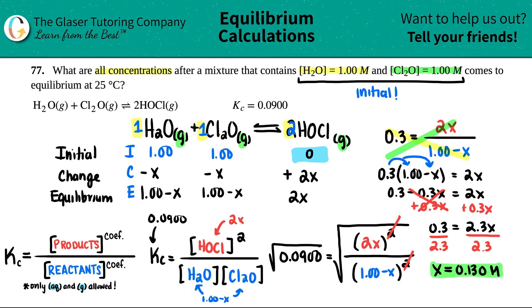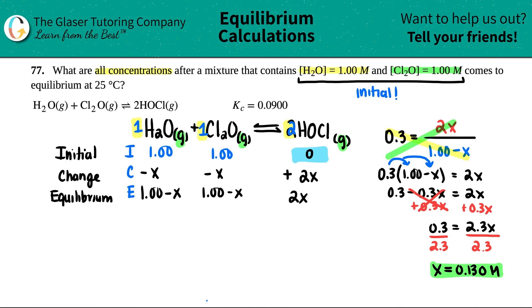That's just the x value, but we have to make sure we're answering the question. The question was, what are all concentrations after the mixture comes to equilibrium? You have to go back to your equilibrium line. I'm just going to get rid of all this math for space.